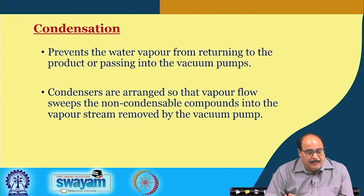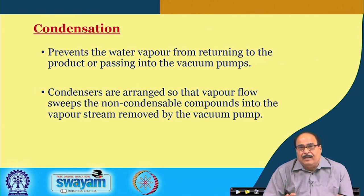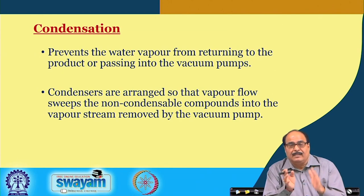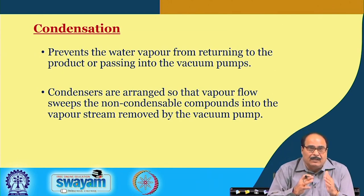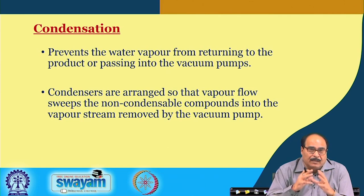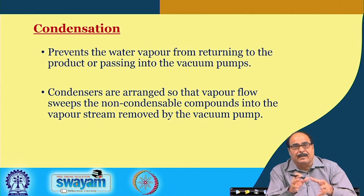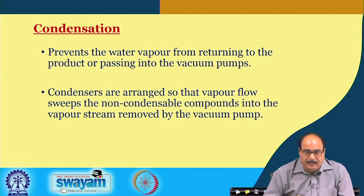Condensation prevents the water vapor from returning to the product or passing into the vacuum pump. Condensers are arranged so that the vapor flow sweeps non-condensable compounds into the vapor stream, which are then removed by the vacuum pump. Effective condensation is very important because the rate of sublimation and mass transfer is greatly influenced by proper condensation. The moisture sublimed in the gas phase is condensed and converted into ice, then removed from the system.